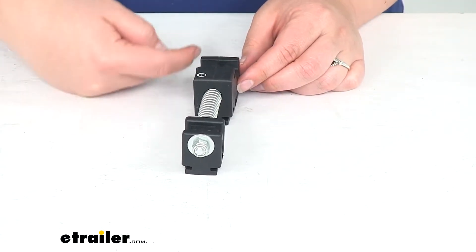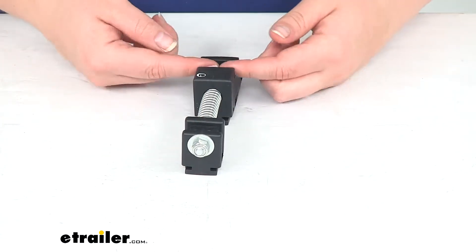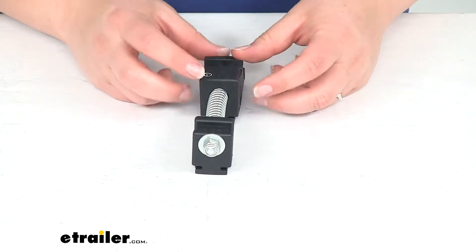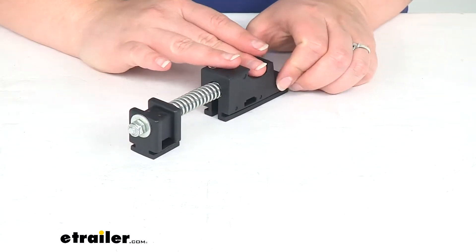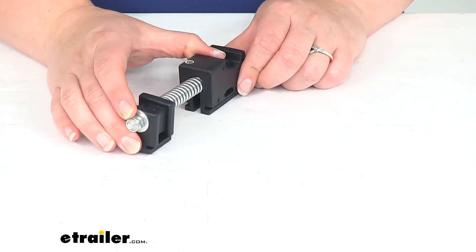So, this end would be pointed towards the cab. This end would be pointed towards the rear, and you're just installing that beam that goes across your soft tonneau cover into this, and it's going to hold it in place and provide the tension so that you can then unroll it out all the way to the tailgate on your truck.